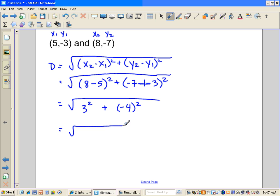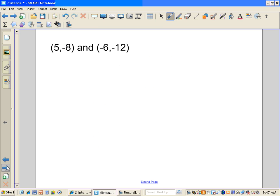And then that becomes 9 plus 16, which is equal to 25, which is equal to 5 units. The square root of 25 is 5. So, again, upping the sophistication level, we don't need to draw out a triangle every time we want to find the distance between two points. Okay?